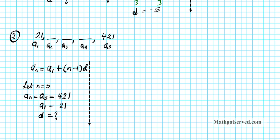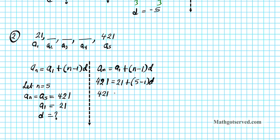Plugging into the equation: a5 equals 421 equals 21 plus (5 minus 1) times d, giving 421 equals 21 plus 4d. Subtracting 21 from both sides: 4d equals 400. Dividing both sides by 4, the common difference d equals 100.